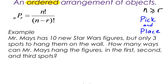Again, n is the total number of objects that you have, and r is the number of objects that you are picking and placing. So I'll just draw an arrow over here. r is the number that you are picking and placing. So here's our example.